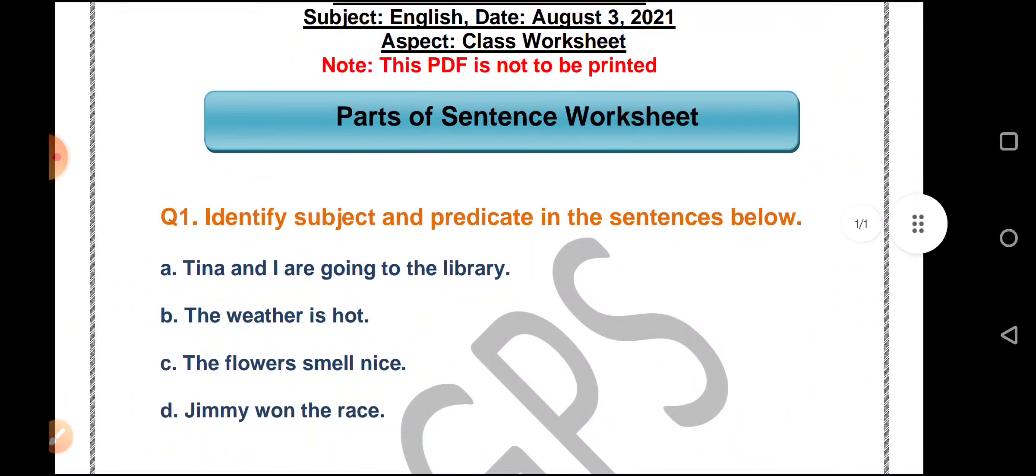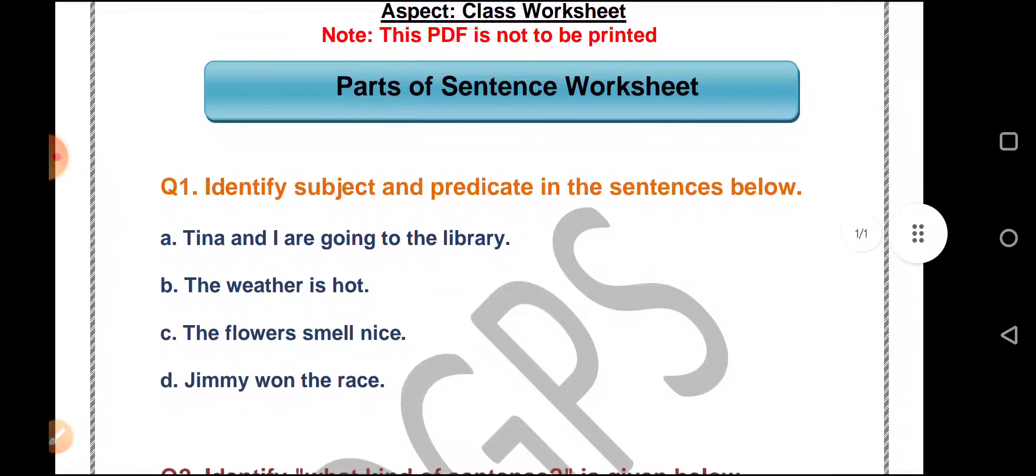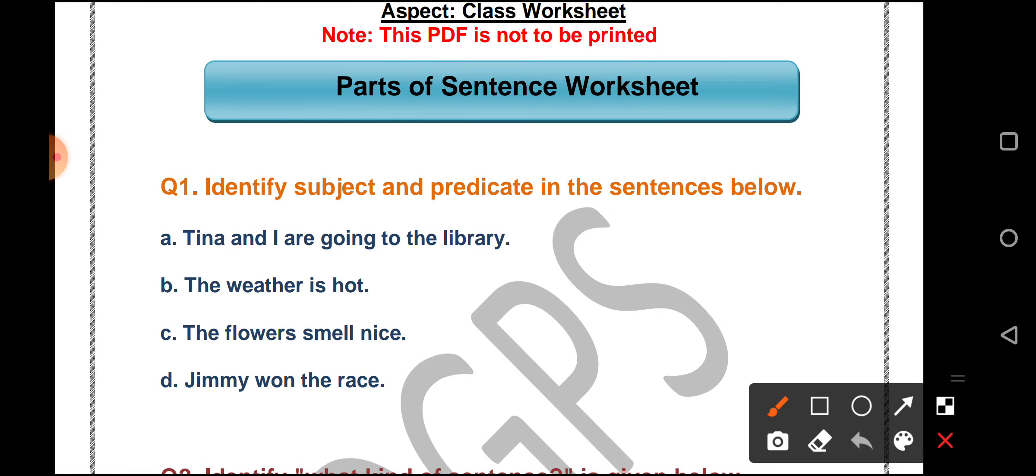Identify subject and predicate in the sentences below. Tina and I are going to the library. So what are we talking about in the sentence here? We are talking about Tina and I. This will become the subject and the remaining will be the predicate.